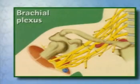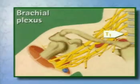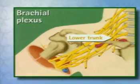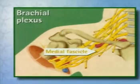Finally, the ventral roots of the 8th cervical nerve and the 1st thoracic nerve form the lower trunk, which together with portions of the middle trunk becomes the medial cord.